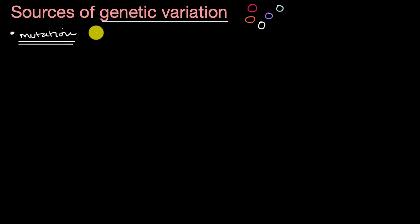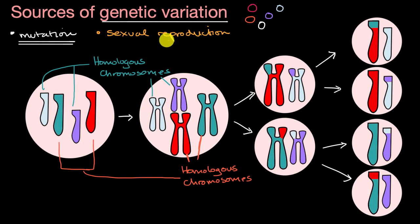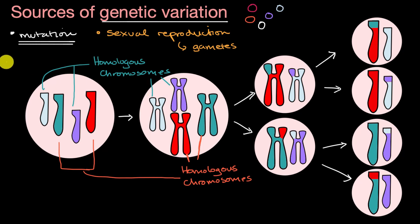Another major source of genetic variation is sexual reproduction. To remind ourselves of sexual reproduction, I'll show you this diagram of meiosis. Sexual reproduction is the process by which we form gametes — for a male organism, that would be producing sperm cells; for a female organism, that would be producing egg cells. This meiosis diagram is for an organism that has two pairs of chromosomes, while human beings actually have 23 pairs. A diagram with 23 pairs would get very complicated very fast.